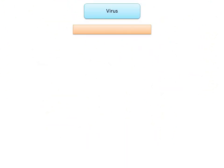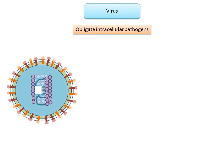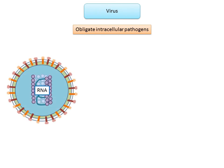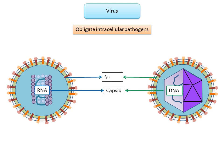Viruses are obligate intracellular parasites that consist of either double or single-stranded DNA or RNA enclosed in a protein coat called a capsid. Some viruses also possess a lipid envelope that, like the capsid, may contain antigenic glycoproteins.